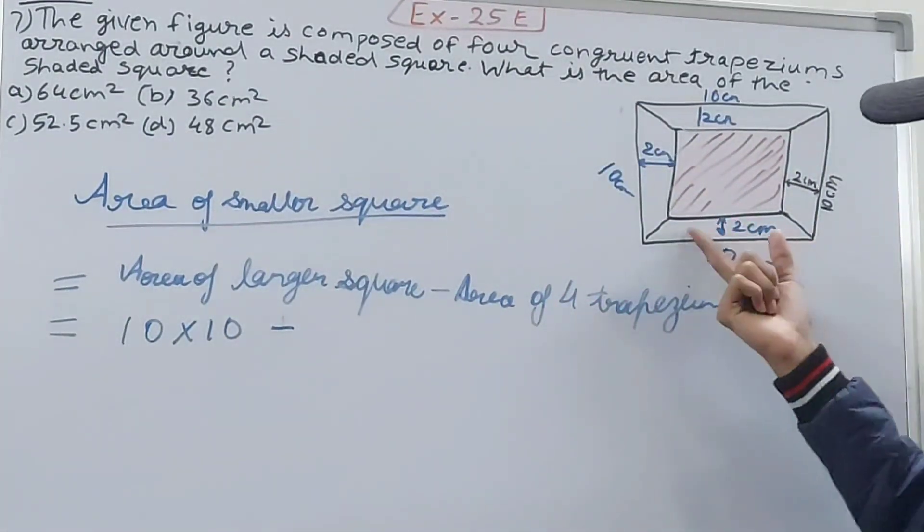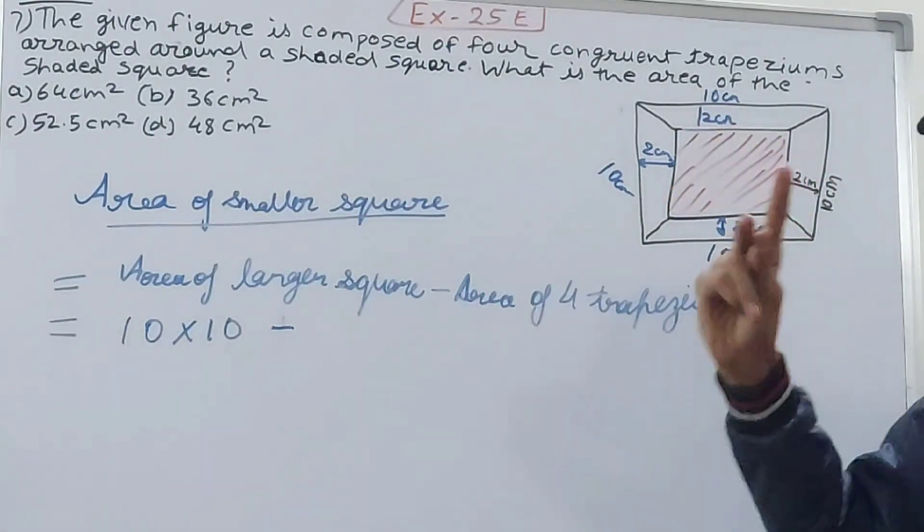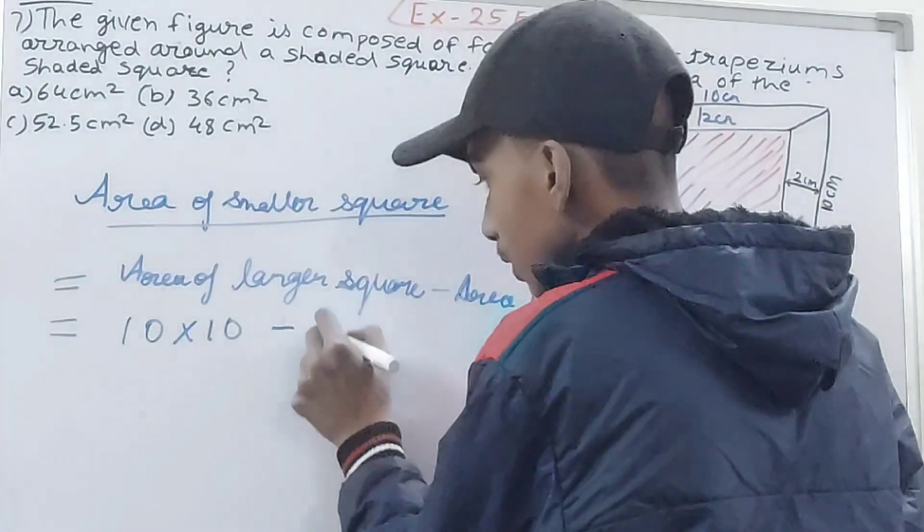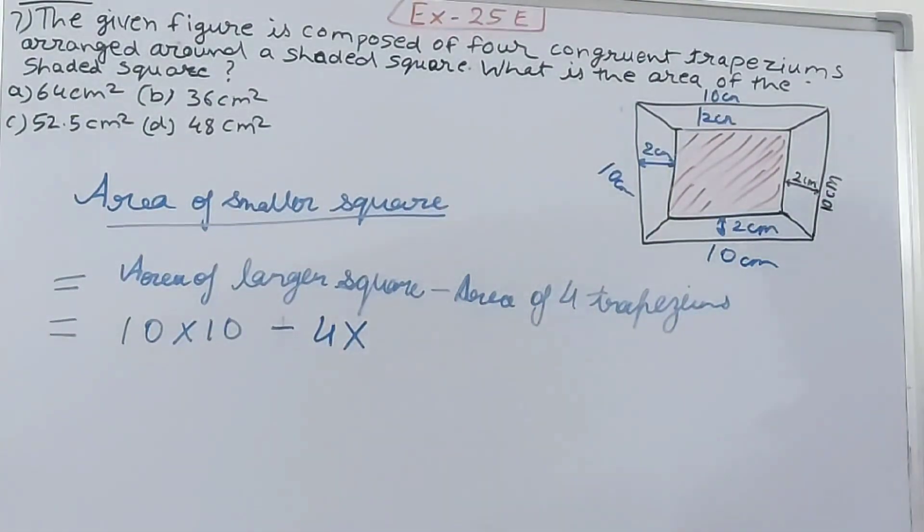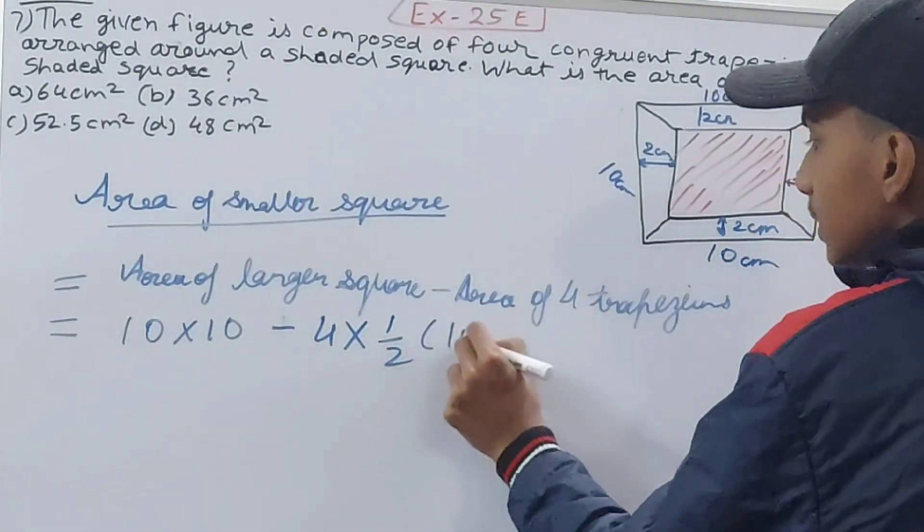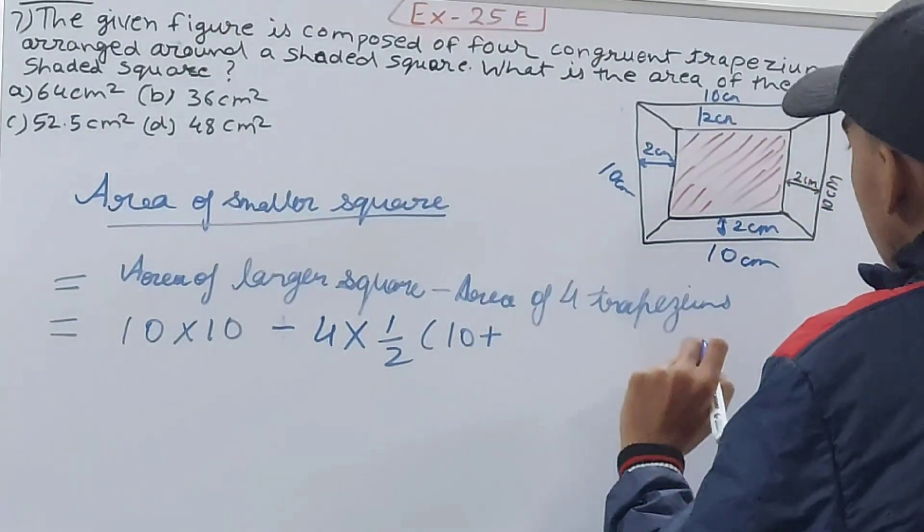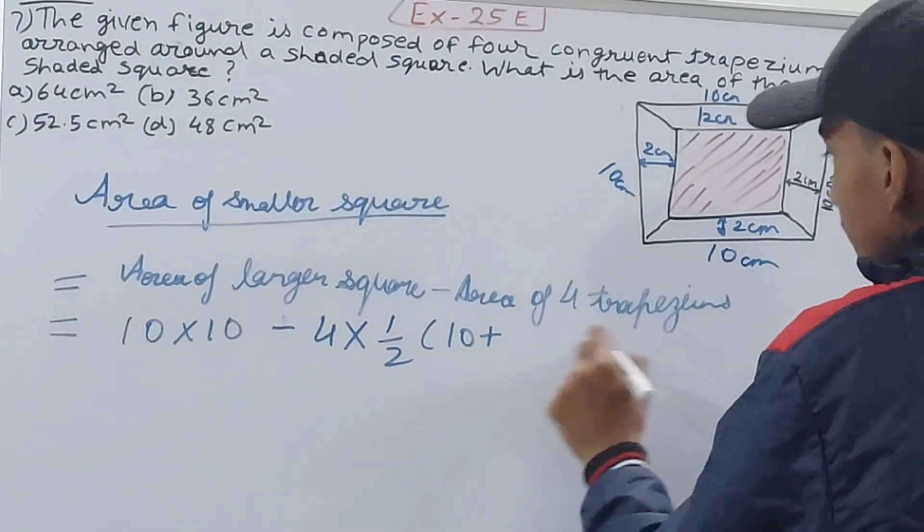Side square we all know, so 10 into 10, then minus area of four trapeziums. So four into the area of one trapezium. Area of one trapezium will be half into sum of parallel sides.